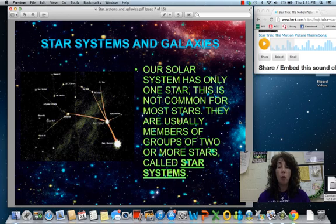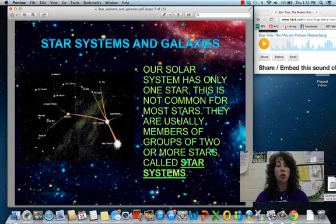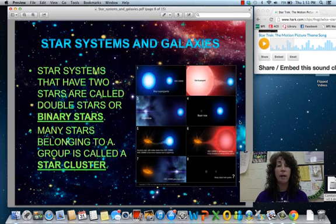Our solar system only has one star, which of course is our sun. This is not common. Stars are actually usually members of groups of two or more stars that are called star systems. So there usually isn't just a single star by itself.